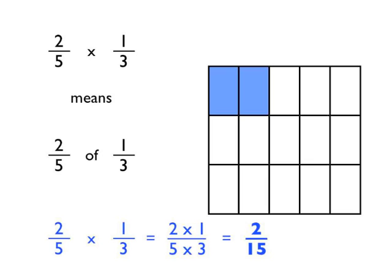And you'll see in the middle of those workings that what I've done is I've actually taken the numerators and multiplied them together. So I've taken the 2 of the 2 fifths, the 1 of the 1 third, times them together, and that gives us the numerator of the answer, 2. So 2 times 1 is 2.